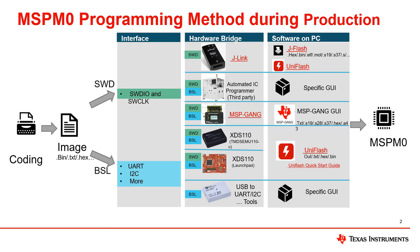The hardware bridge requirement from computer to MCU is a USB to UART or I2C converter. The host computer will then send instructions according to the BSL protocol. If needed, a secondary BSL can be created to use other communication interfaces or functions. For further information please see the MSPM0 bootloader's user's guide.